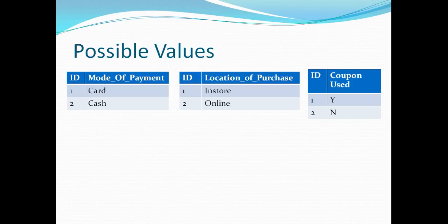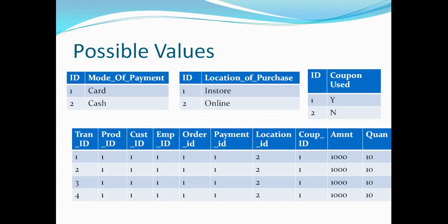If we look at the real transaction table with the previous metadata, it has these three columns being repeated a billion times. For example, the first row signifies that the payment was made using card, in-store, and the coupon was used. Because of this, we are adding three additional small tables, and if I want to retrieve transactions done in-store with a coupon and paid by cash, I have to join these three tables with the transaction table, making my warehouse design more complex. At the same time, my storage is increased because I'm storing these values a billion times.